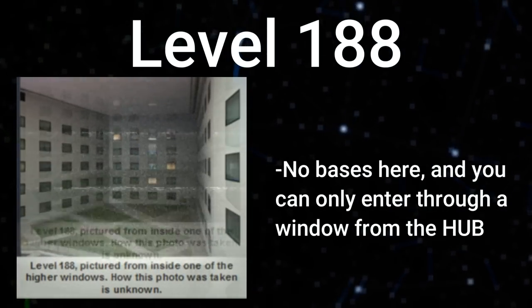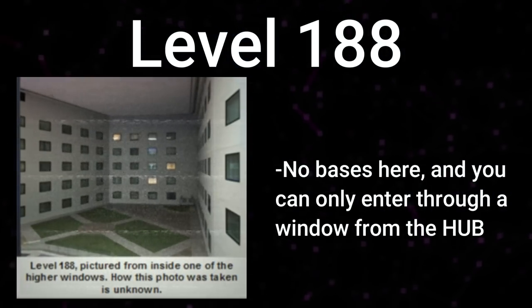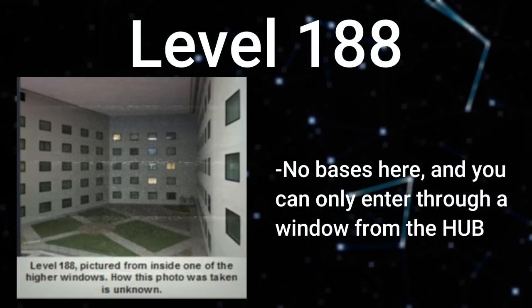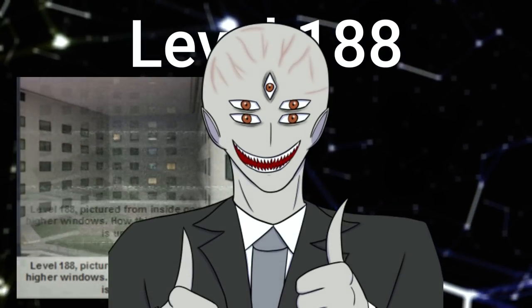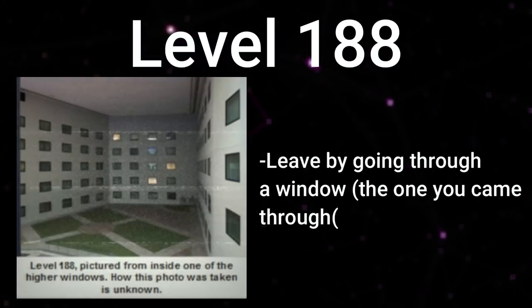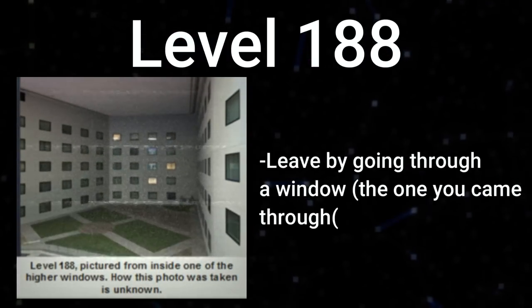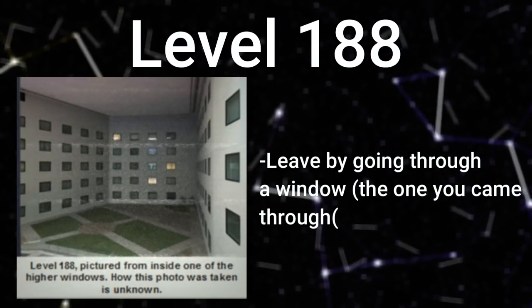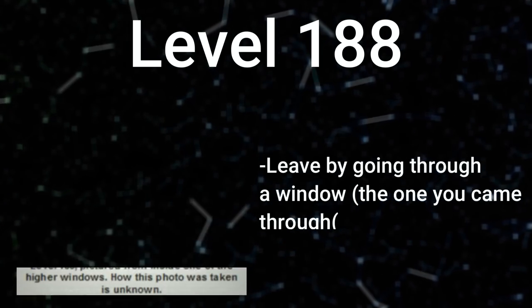There are no bases here and you can only enter this level through a window that can appear inside of the hub. However, this is not advised since windows have those shadowy figures that might attack you. You can leave this level by going through one of the windows, but specifically try to go through the window that you came in from since you know for sure it works.